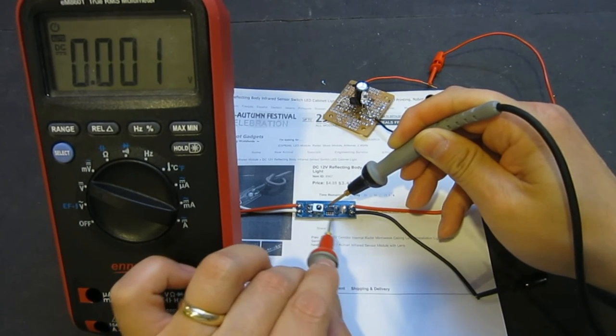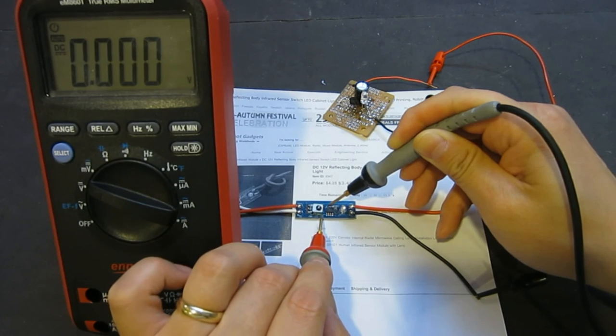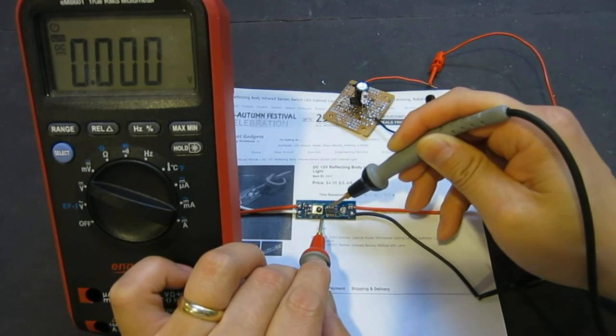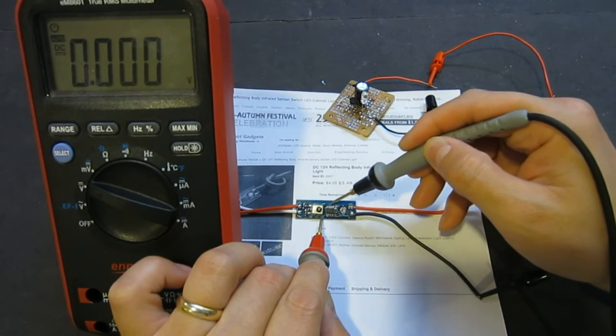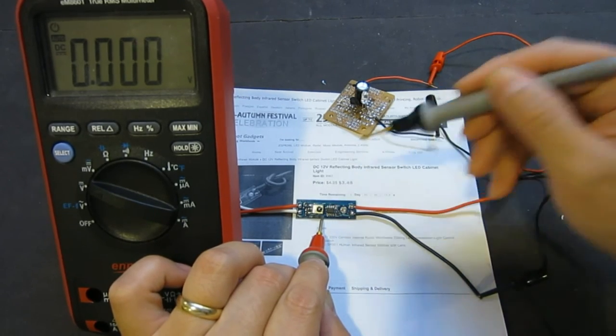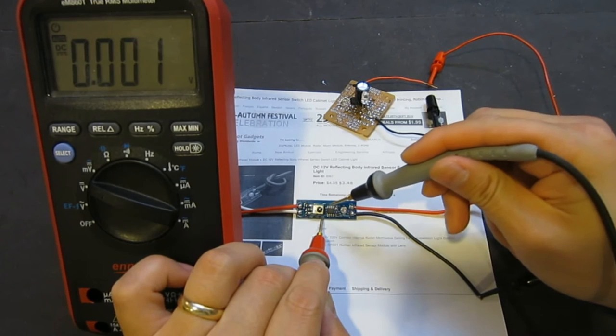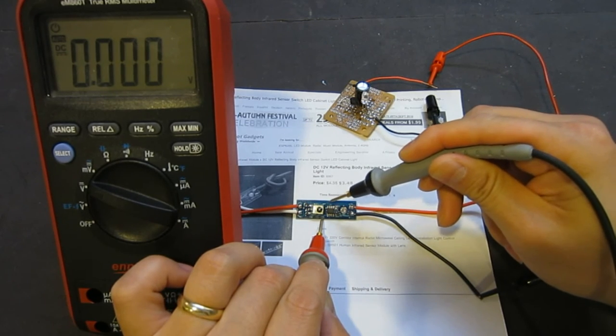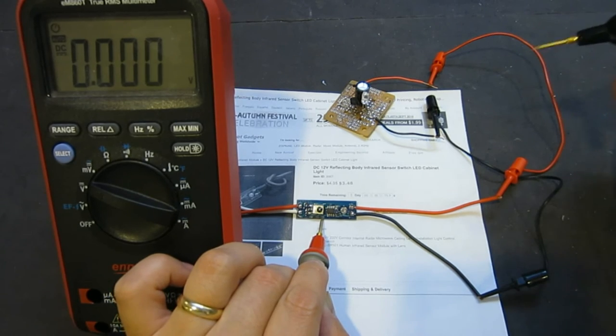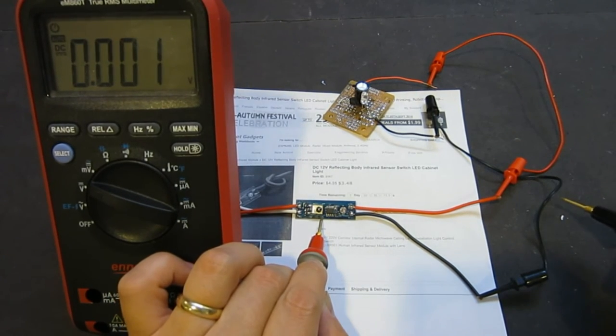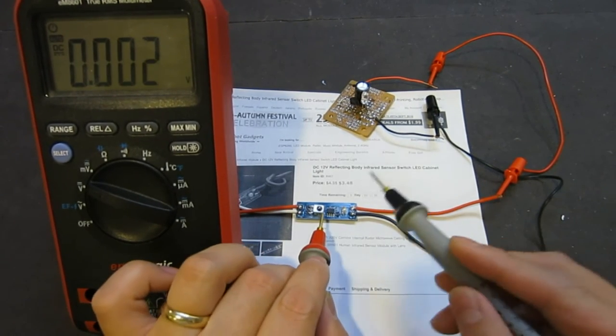So it looks like the eighth pin is our ground. Now, for an eight pin device, that looks awfully similar, well, awfully like a PIC 12 series microcontroller. Because in PIC 12 series, the pin eight is your ground and the pin one is your positive power supply. So that is very plausible.